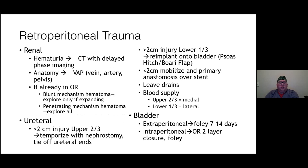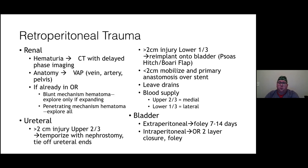Ureteral injury is more commonly tested. For greater than 2 cm injury in the upper two-thirds, temporize with nephrostomy and tie off the ureteral ends. For greater than 2 cm in the lower one-third, attempt re-implantation onto the bladder, possibly assisted by a psoas hitch or Boari flap. If less than 2 cm, mobilize the ends and anastomose over a stent. Leave drains regardless. Most common post-operative complication is stricture due to violation of blood supply.